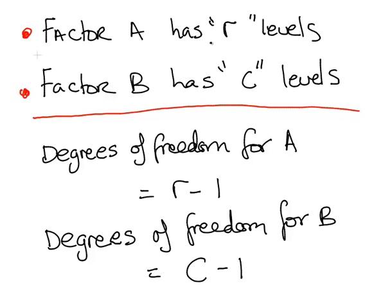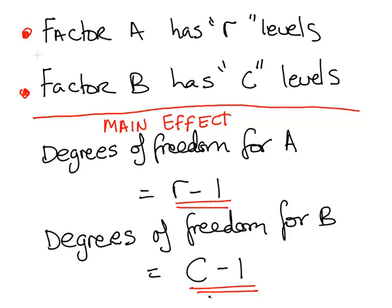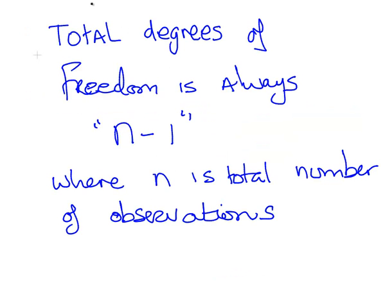Factor A has R levels and factor B has C levels. The degrees of freedom for main effect A is R-1, and for main effect B is C-1 — where R is the number of rows and C is the number of columns. The total degrees of freedom is always N-1, where N is the total number of observations.